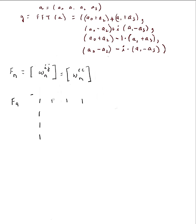Row one, column one is the principal root to the first power. The principal fourth root of unity, omega_4, equals e^(2πi/4) = e^(iπ/2), which has angle π/2, so omega_4 = i. The four fourth roots of unity are: i, -1, -i, and +1.